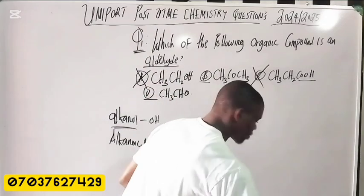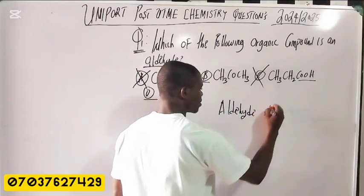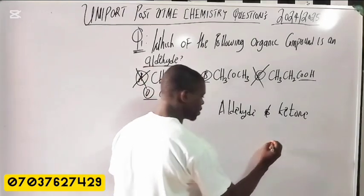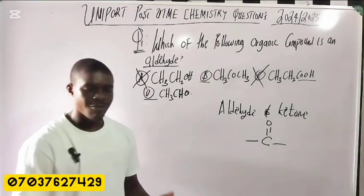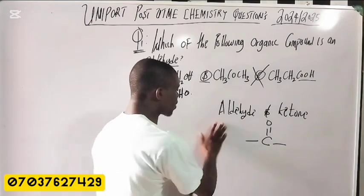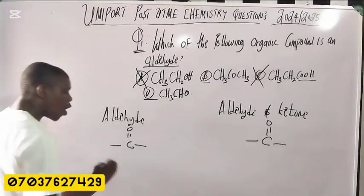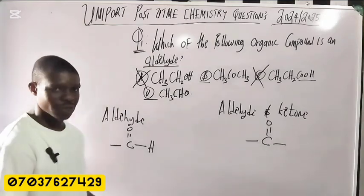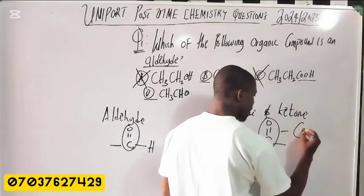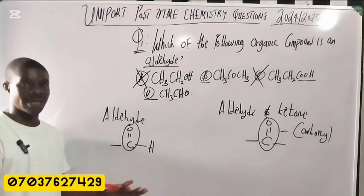Why? Because when we talk about aldehydes and ketones, they have a similar functional group called the carbonyl functional group. Aldehydes and ketones both have the carbonyl functional group. But what is the difference? An aldehyde with the carbonyl functional group always has a hydrogen attached to the carbonyl carbon.